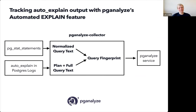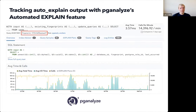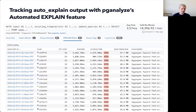How does pganalyze do this differently? pganalyze doesn't use the query ID directly — mostly because we're interested in a more stable identifier. In the pganalyze collector, which runs in your infrastructure, we take the pg_stat_statements data, auto_explain data, and query texts, and calculate what we call a query fingerprint. The query fingerprint takes the parse tree and computes a 64-bit integer, but the key benefit is that it's more stable than the Postgres query ID. In practice, pganalyze has a list of all queries running on your database. If you go to an individual query, you'll see the query fingerprint on top and can see all slow executions of that query directly in the pganalyze UI.